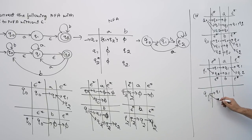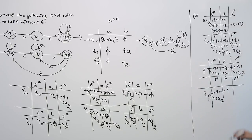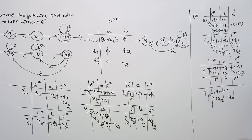For state Q1 with symbol B: if you are seeing symbol B on Q1, you are not going anywhere. If you are seeing symbol B on Q2, you are not going anywhere — so we go to phi. The epsilon closure of Q0 is {Q0, Q1, Q2} — these are three states.